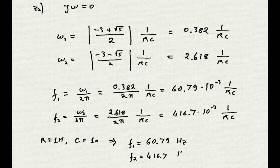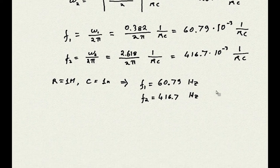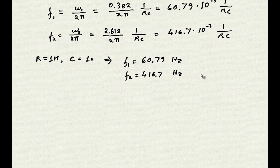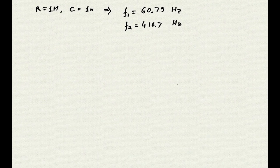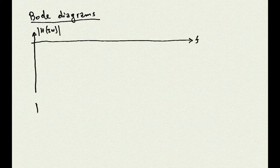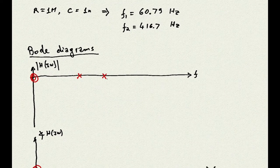We obtain the two poles at frequencies 60.79 Hz and 416.7 Hz. At this point, we have the values for both zeros and both poles, and so we can draw the Bode diagrams for this filter using the approximation method that we learned in the previous episode. Let's start by drawing the axis for the magnitude diagram, and then those for the phase diagram. Let's now draw on the f-axis the location of zeros and poles.